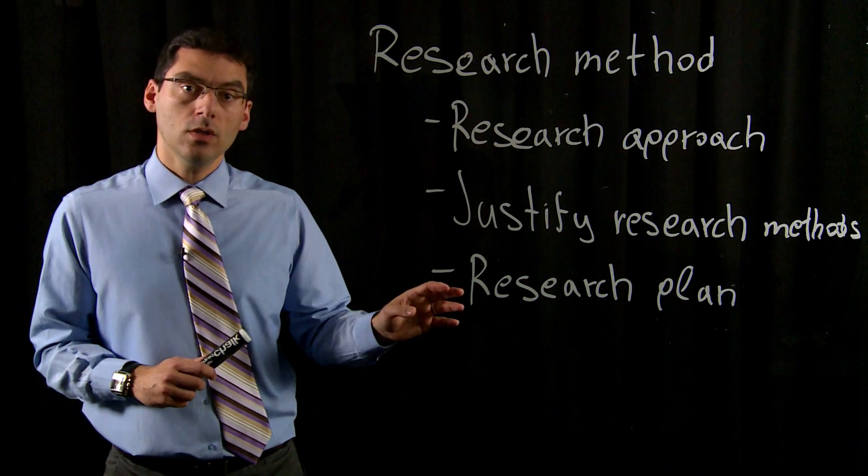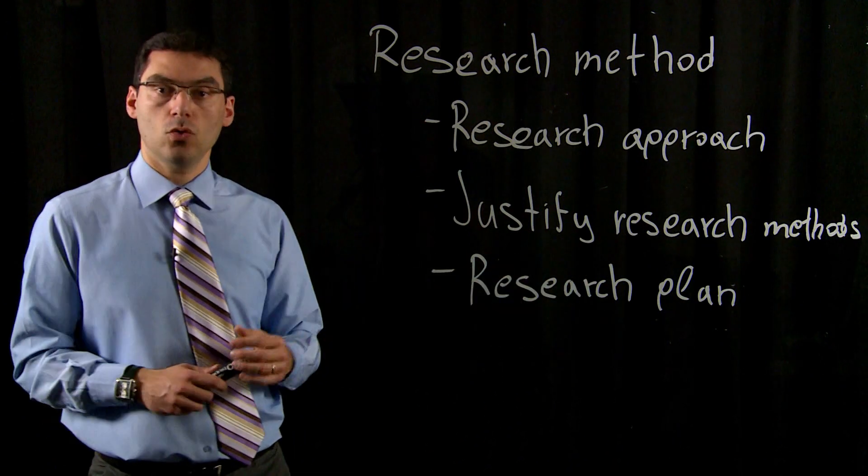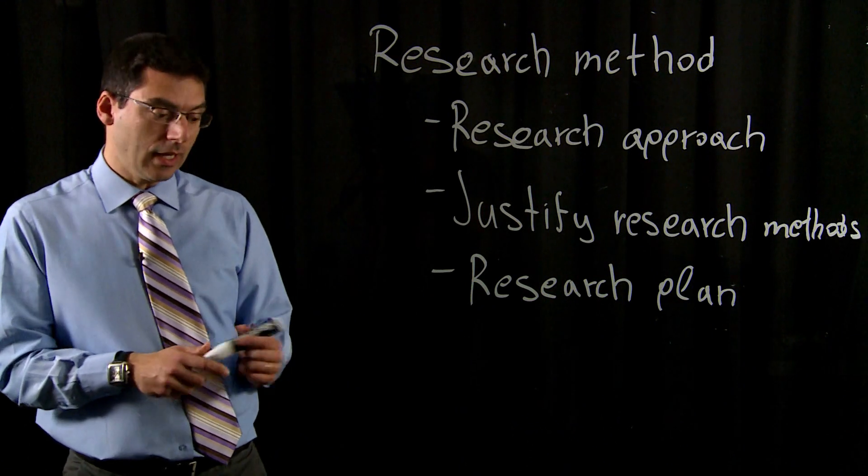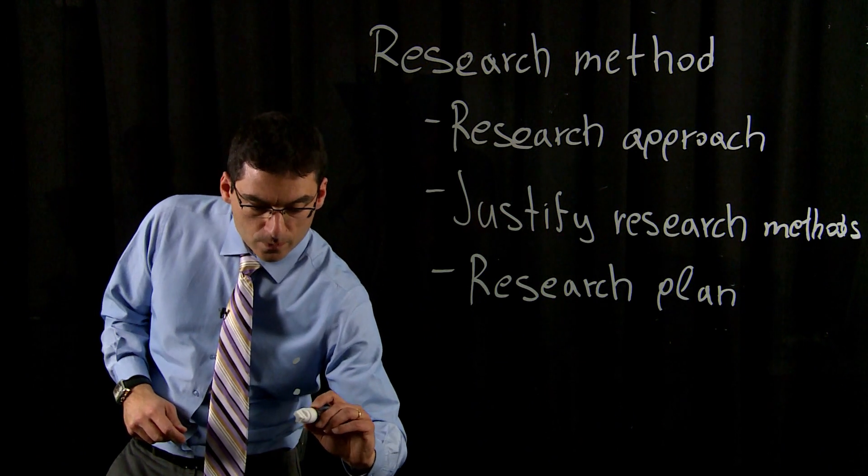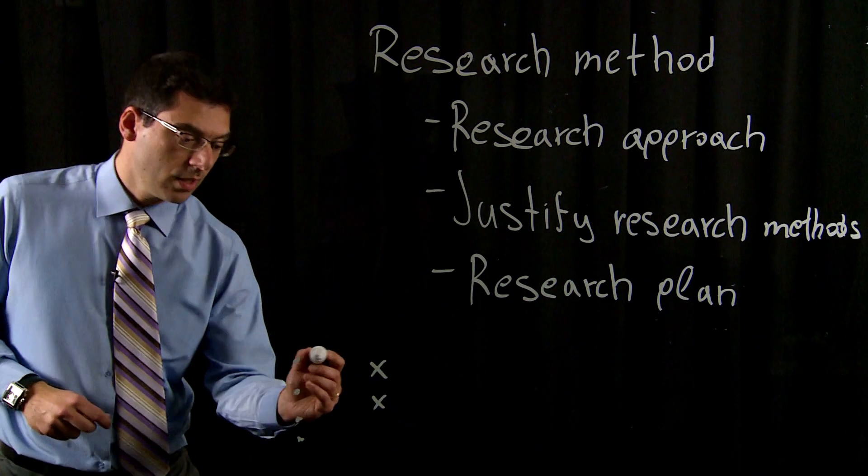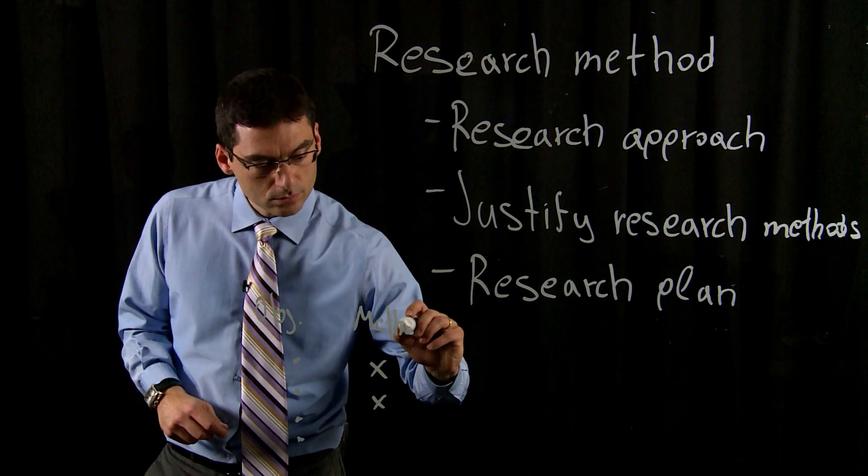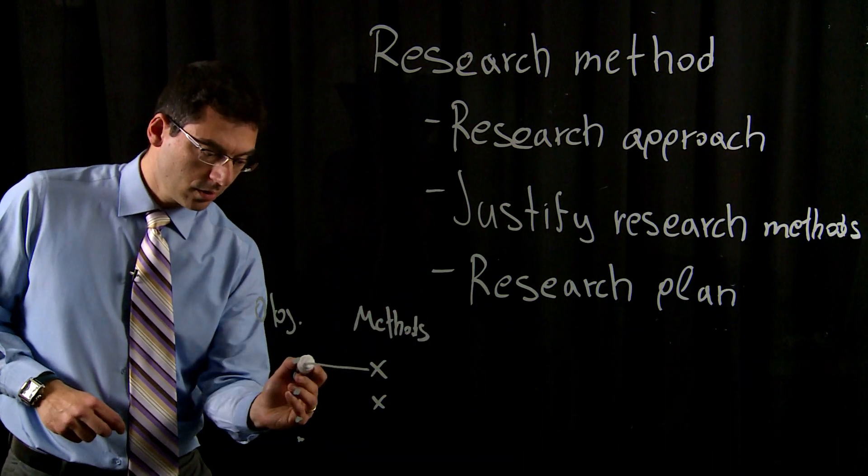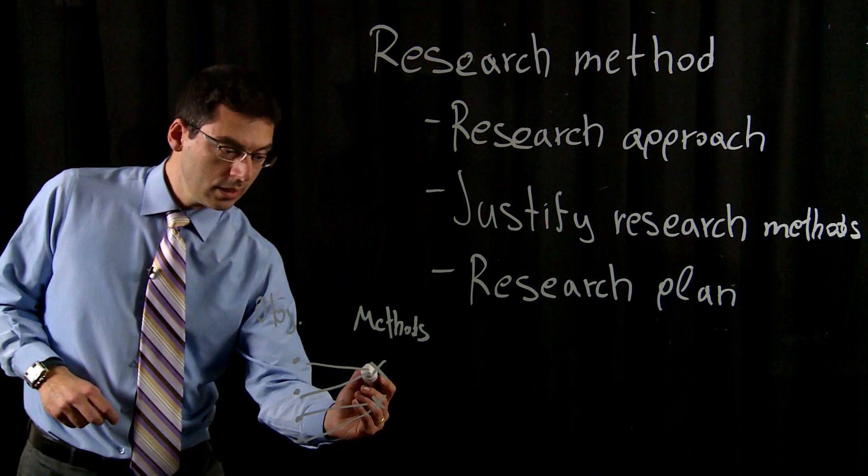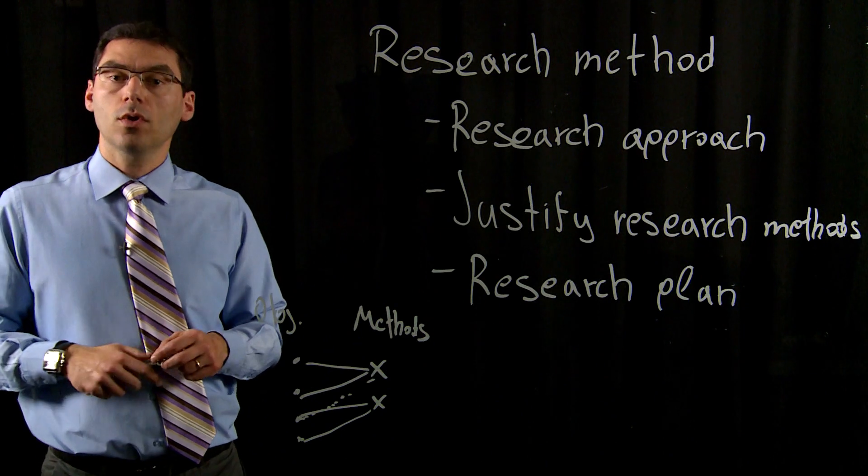This is to make sure that there are no research objectives which are not really researched on the execution while you are executing the research. Try to make a kind of connection. If these are your research objectives and these are your research methods, make sure that all the objectives are handled by at least one research method. One method might address or work in order to address more than one objective.